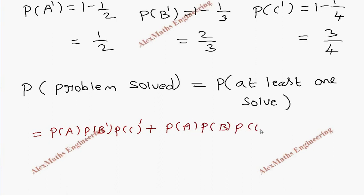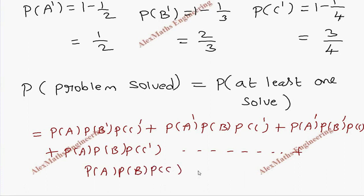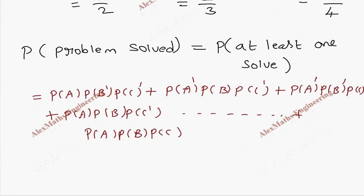In that, A and B not solving and C is solving — so these three expressions represent exactly one solving. Then two solving will be A and B solving but C is not solving, and like this two more cases will come. Then all three solving is P(A) into P(B) into P(C). So this involves so many calculations, but we are not going to do it by this method.